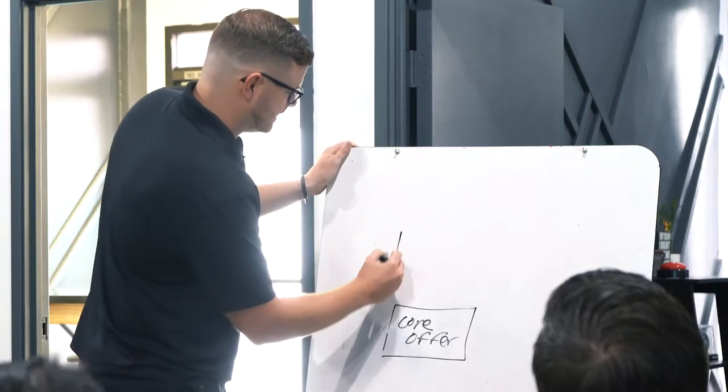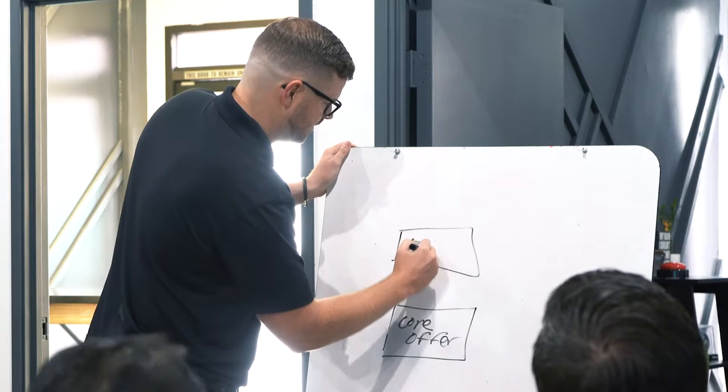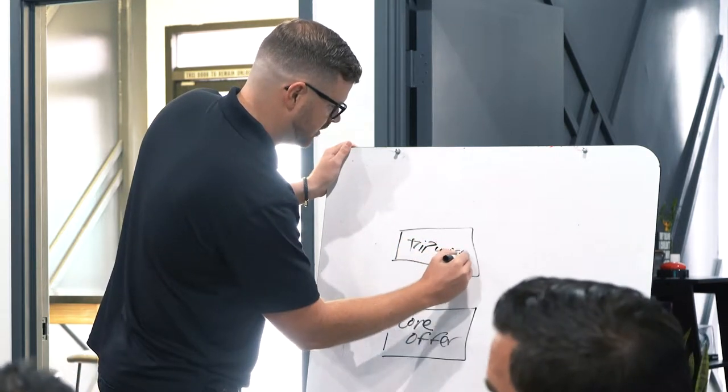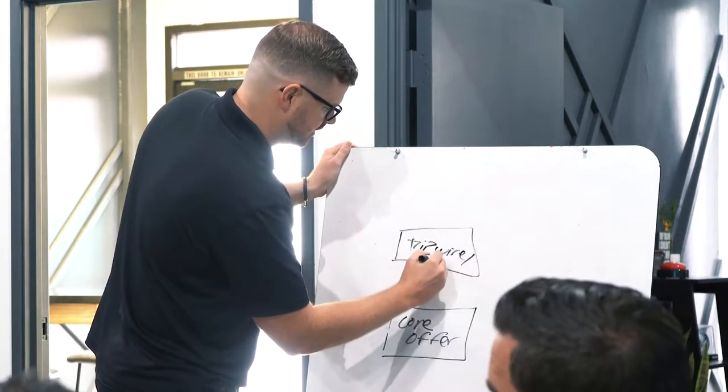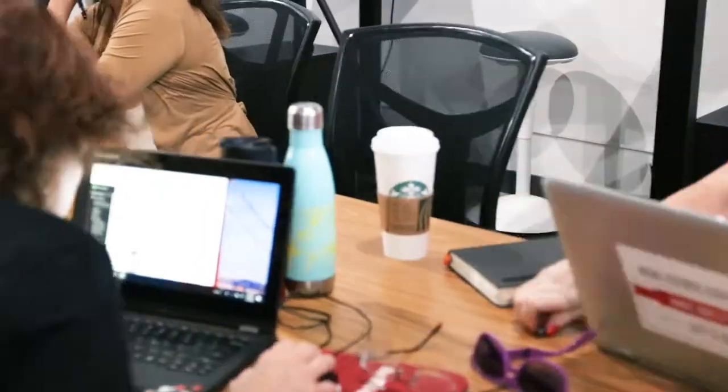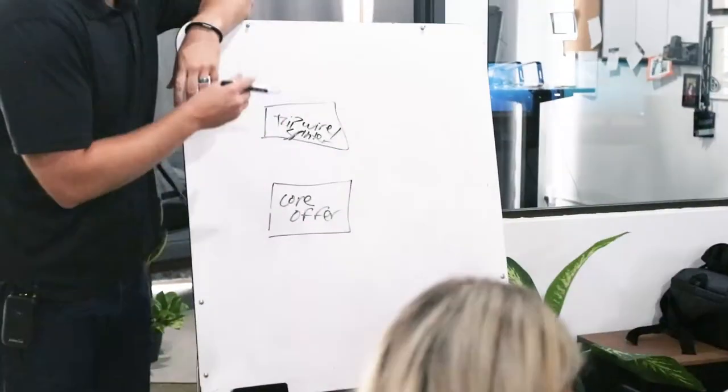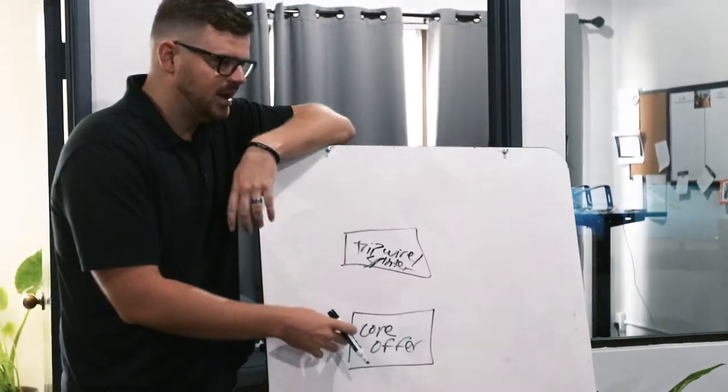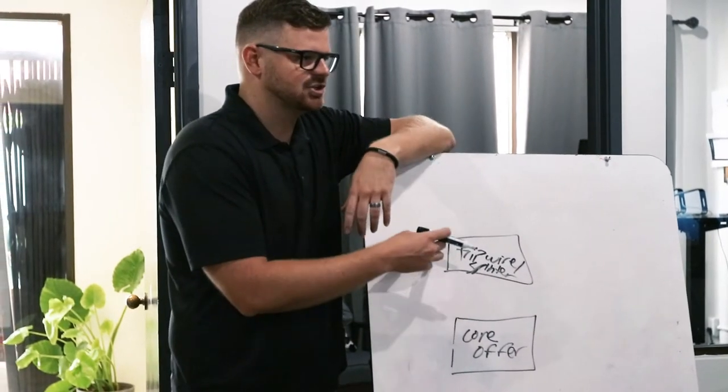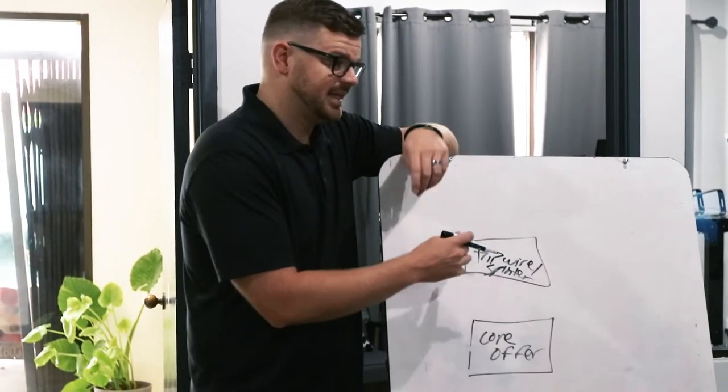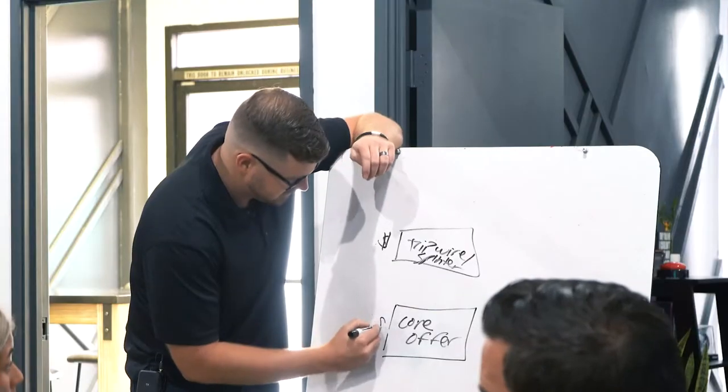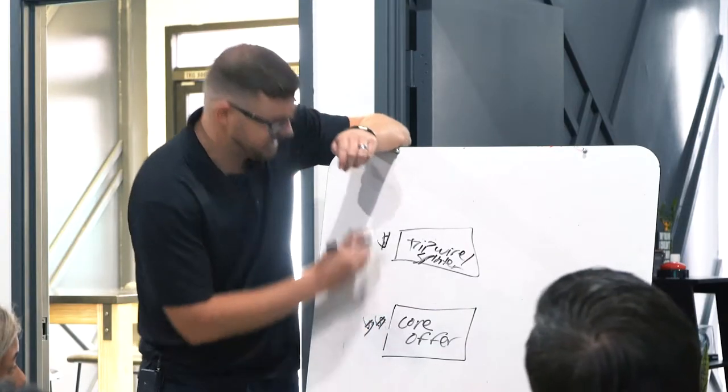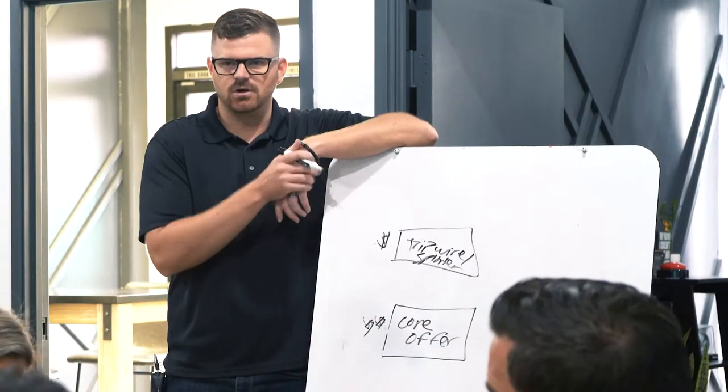The second step is what is called the tripwire. The tripwire or the splinter is the second process. The tripwire is a portion of your main thing that has been extracted that does have a dollar value to it, but it's a lower dollar value than your core offer.